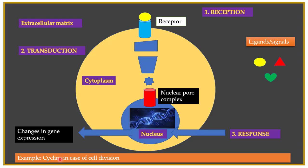So these are the three steps of a signaling pathway: reception, where the ligand interacts with the receptor; transduction, where a lot of proteins get activated in the cytoplasm; and the response, where the activated transcription factor interacts with the DNA in the nucleus, thereby causing changes in gene expression.